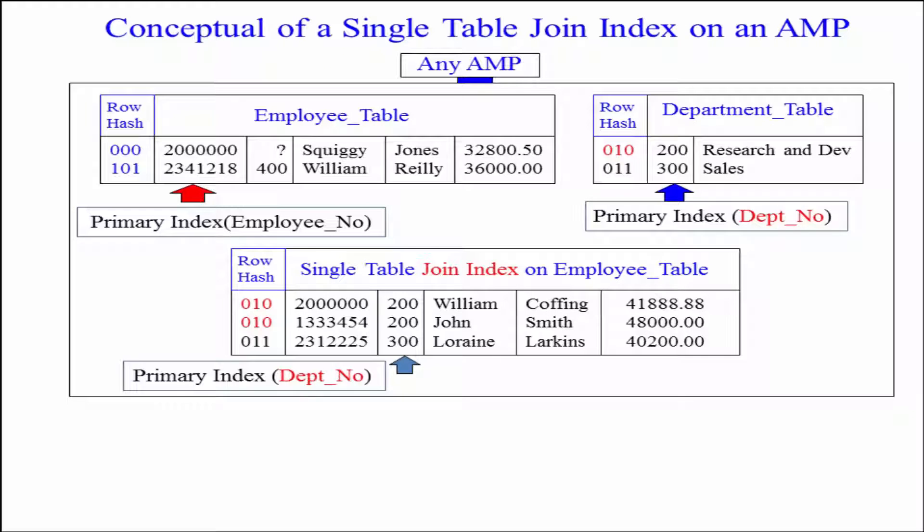So, if someone queries and says, select everything where employee number equals 2 million, the parsing engine says, that's the primary index of the employee table, use it. But if someone queries and says, select everything where department number equals 200, the parsing engine says, hold on.